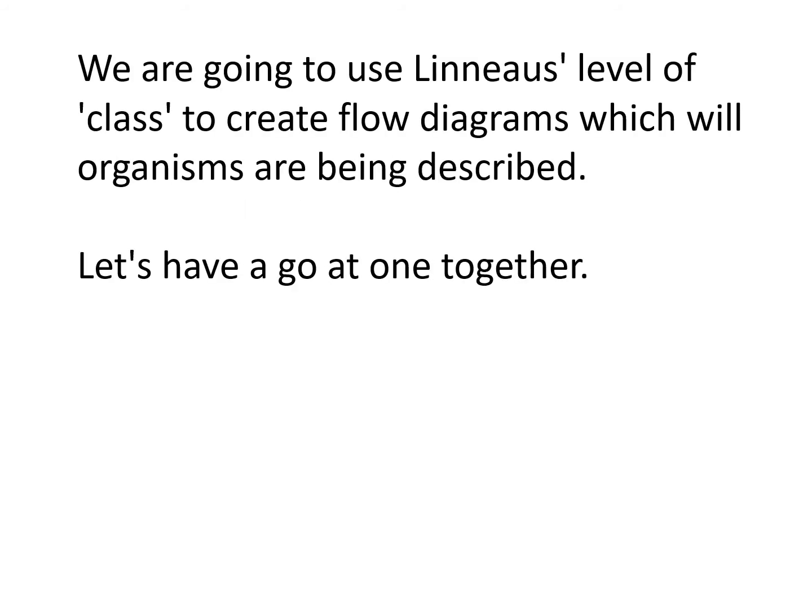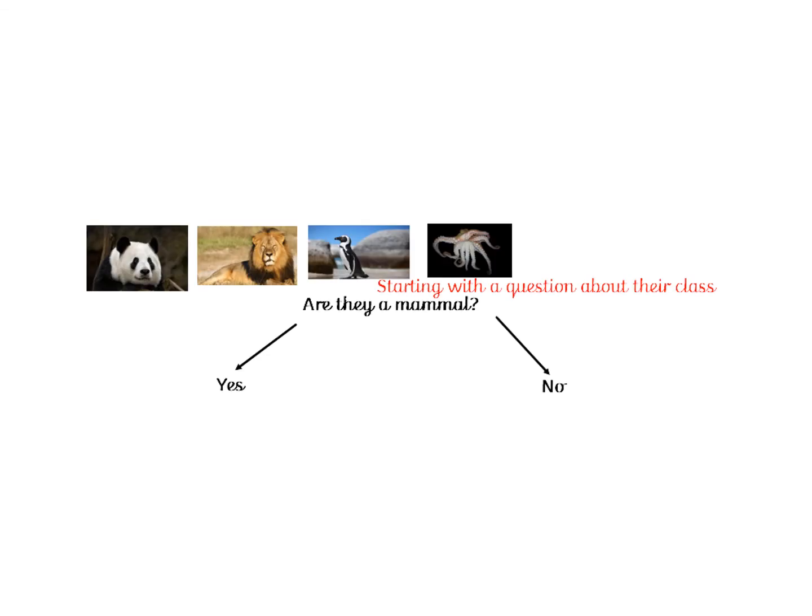So today we're going to use the level of class — which covers mammals, reptiles, etc. — to create some flow diagrams that will describe organisms. Let's have a look at one together so it makes a little bit more sense. Here I've got four animals: a panda, a lion, a penguin, and an octopus. I'm going to start with a question about their class.